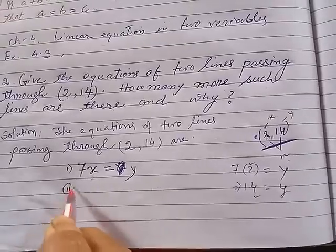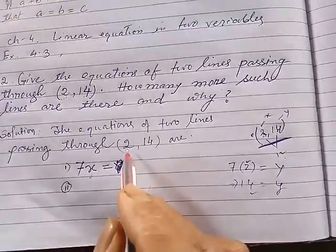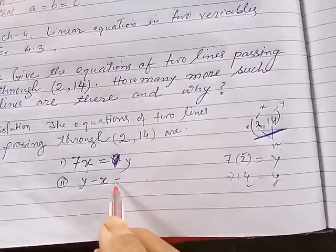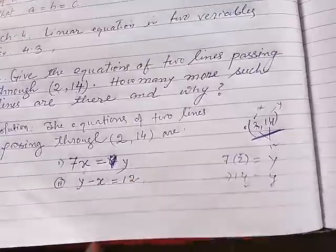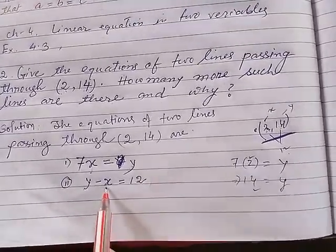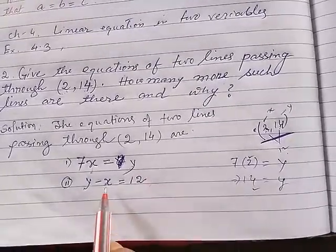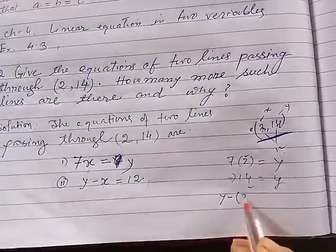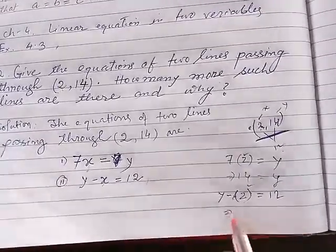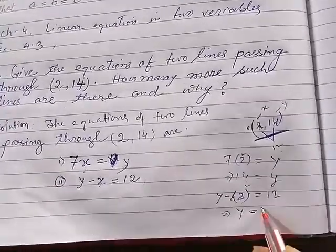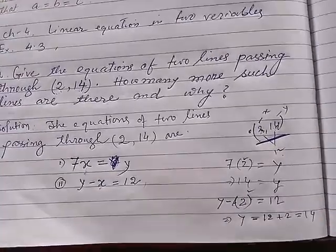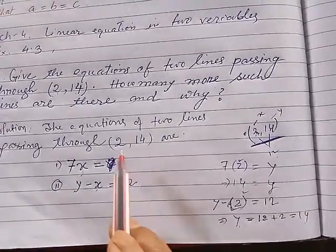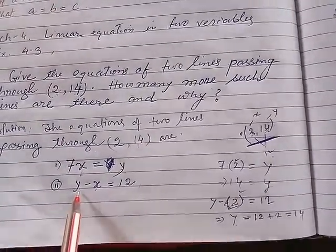Another equation you can form like this: the difference y minus x. Think carefully — y minus x means 14 minus 2 equals 12. So this is also a possible equation. When x value is 2, then y minus x equals 12, which gives y equals 12 plus 2, ultimately 14. So when x is 2, y is 14 — this point lies in this equation too.